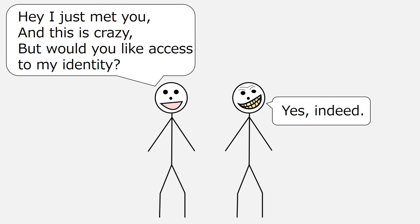Social media friends are often people who we don't know very well — perhaps people that we met at a party, associates who we know through a friend, or people who we haven't seen in a long, long time. In the real world, most of us wouldn't share the same kinds of private information with distant associates that we would share with our closest friends. But social media do not automatically make distinctions between close friends and non-close friends. To social media, a friend is a friend, and its default settings will allow all of your friends equal access to all of the private information that you share.